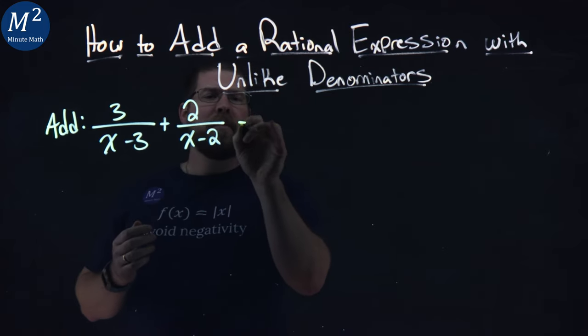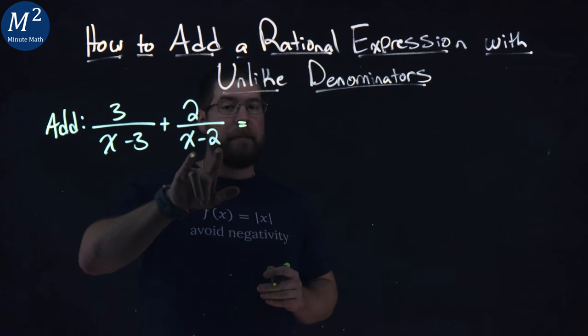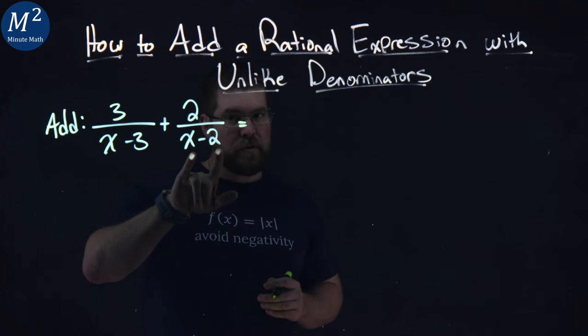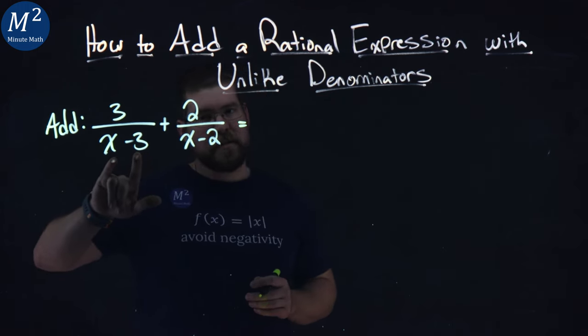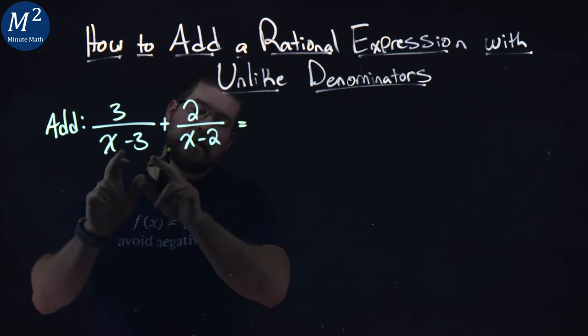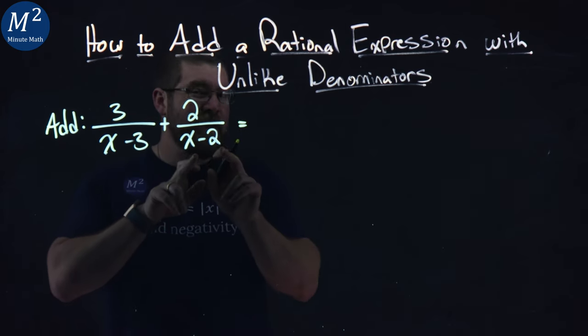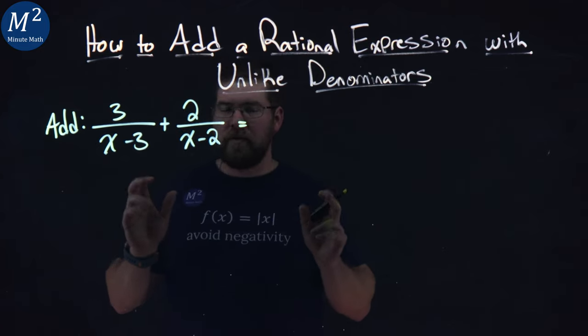Well, how can we do that? If I take this x minus 2 and multiply it to this denominator, x minus 3, and I take this x minus 3 and multiply it by x minus 2 in this denominator, our denominators will be the same.